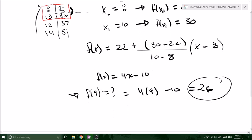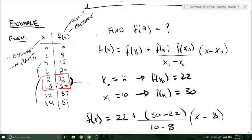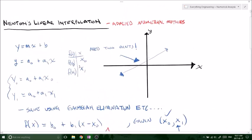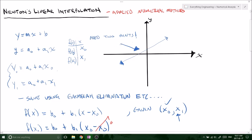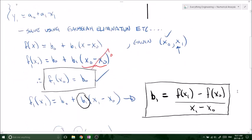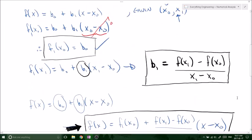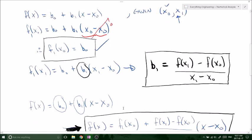So there you have it. We just interpolated a linear line, a linear equation given a set of data points using Newton's interpolation method. It's pretty simple. My next video, I'm going to do a quadratic formula where it would be a little bit more useful than just interpolating a linear equation rather than doing the Gaussian elimination.